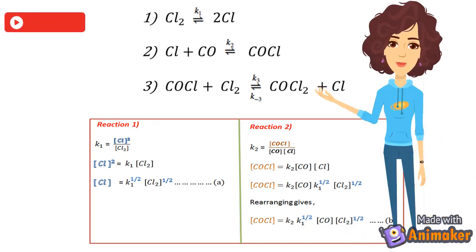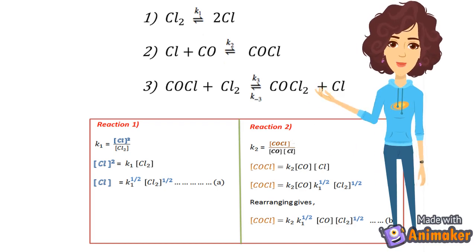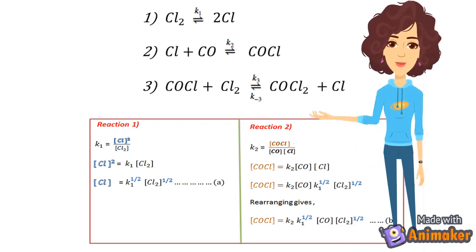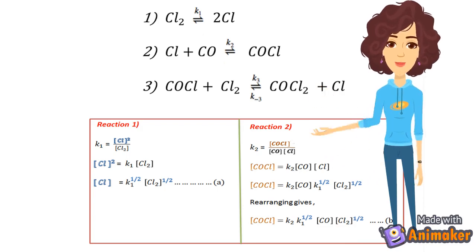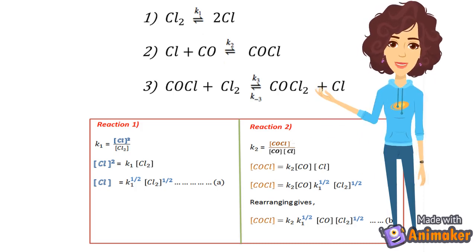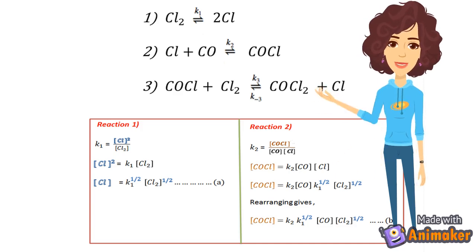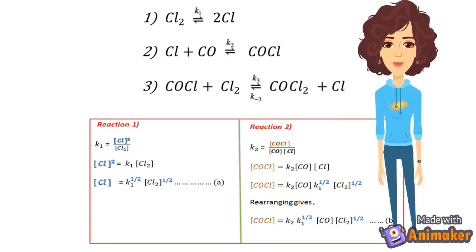Now we are left with reaction 3, and this reaction is important because the rate expression for both the formation and the decomposition of phosgene can be obtained from it. The forward direction in reaction 3 with rate constant K3 shows the formation of phosgene, and the backward direction with rate constant K-3 shows the decomposition of phosgene.